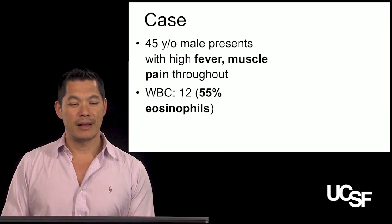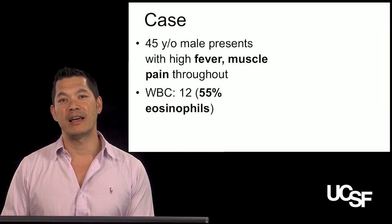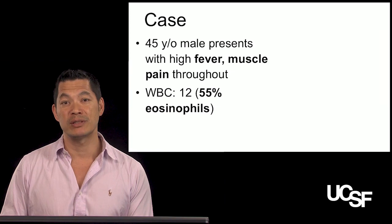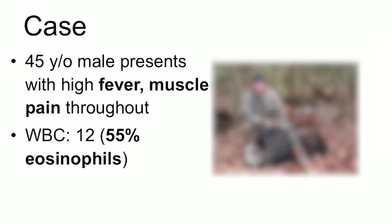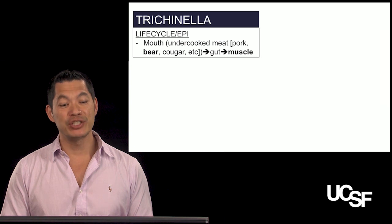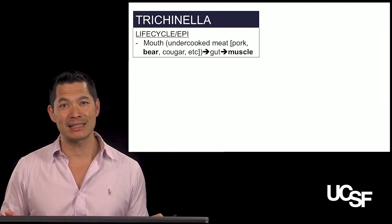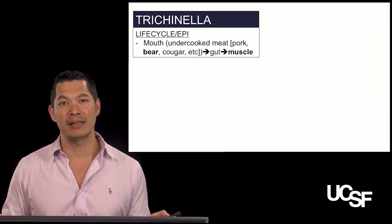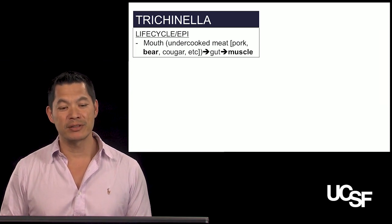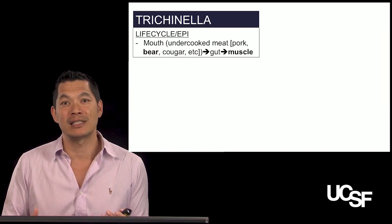The next parasite: a 45-year-old male presenting with high fever, muscle pain, and sore throat. White count is 12 with 55% eosinophils — very significant; anything above 20% is particularly significant for eosinophilia. This patient turns out to be a boar hunter. This parasite is Trichinella — a roundworm. You ingest it typically in its larval encysted stage; the larvae encyst themselves in striated muscle. People affected are hunters, particularly of wild pigs, bears, or cougars, and if the meat is undercooked you can ingest intact larvae in cyst form.